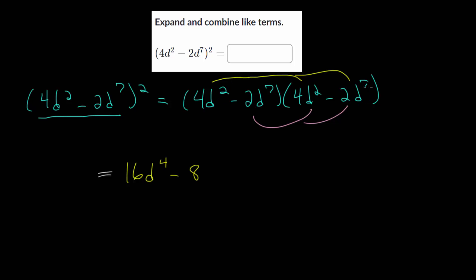d squared times d to the seventh — we have two d's here and seven more here, so in total we have nine d's multiplied together, giving d to the ninth. Then we start over with the minus 2d to the seventh multiplied by 4d squared. Minus 2 and 4 gives us minus 8, and d to the seventh times d squared is d to the ninth.